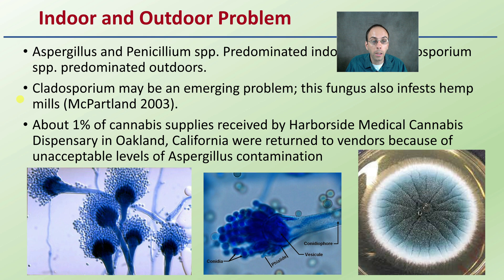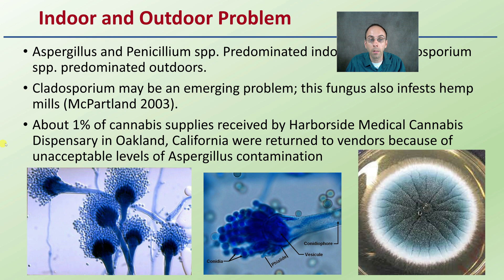About 1% of cannabis supplies received at Harborside Medical Cannabis Dispensary in Oakland, California were returned or rejected by vendors because of unacceptable levels of Aspergillus contamination. Here's what it really looks like at a zoomed-in level — conidia, these little spores that break off. It doesn't look like this on the actual cannabis plant and might be hard to see without proper microscope technology, but 1% of supplies were rejected because of just this one microbial contaminant, so it is a real problem.